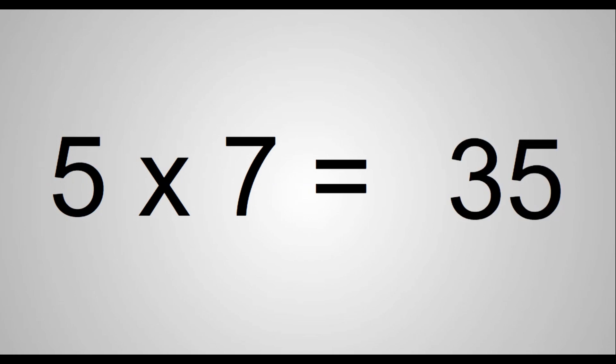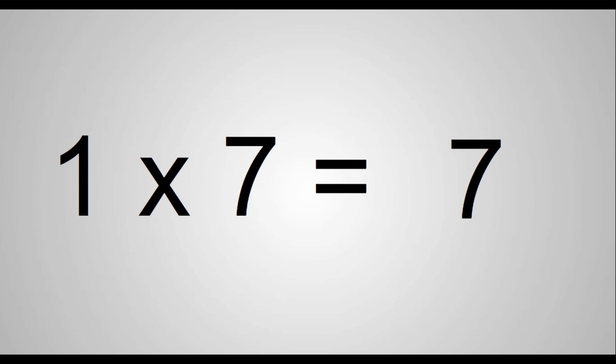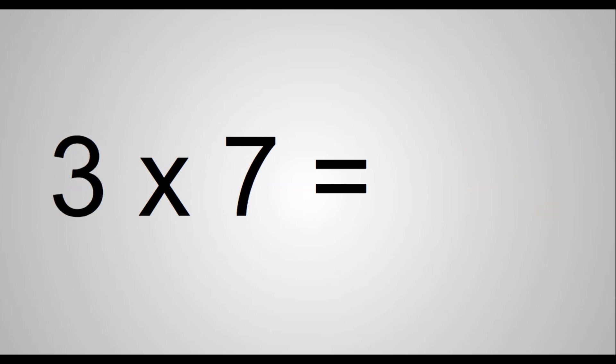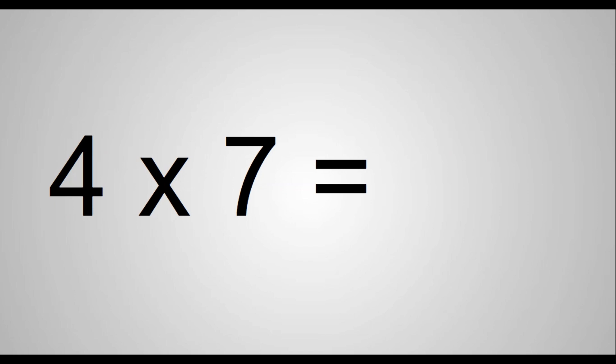Let's do those again. 1 times 7 equals 7. 2 times 7 equals 14. 3 times 7 equals 21. 4 times 7 equals 28. 5 times 7 equals 35.